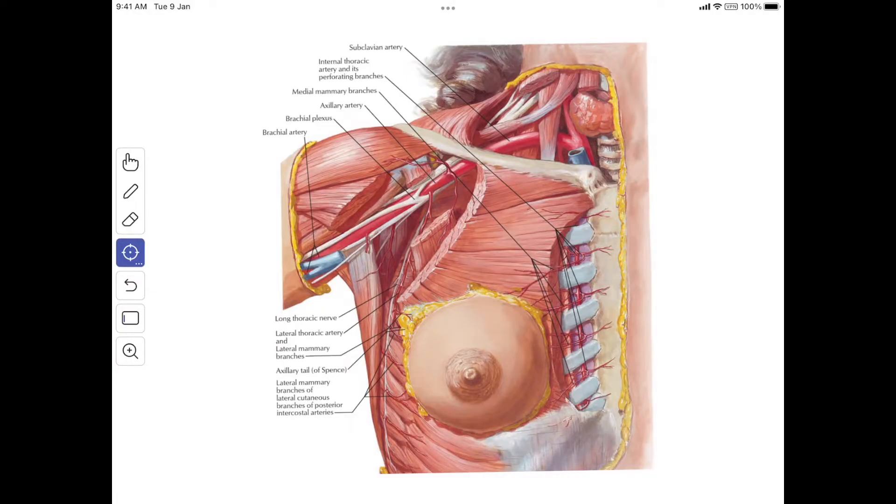In this video, we will study the blood supply of the mammary gland. First, we will study the arterial supply, starting with the lateral thoracic artery.